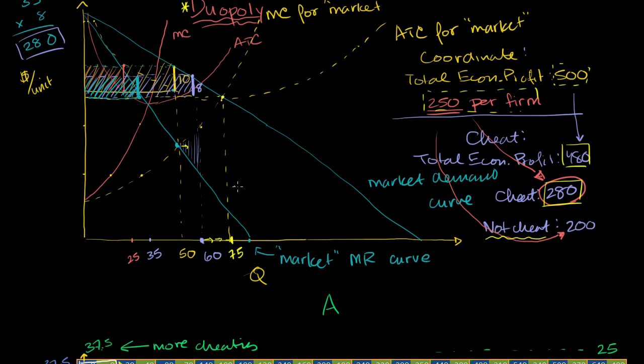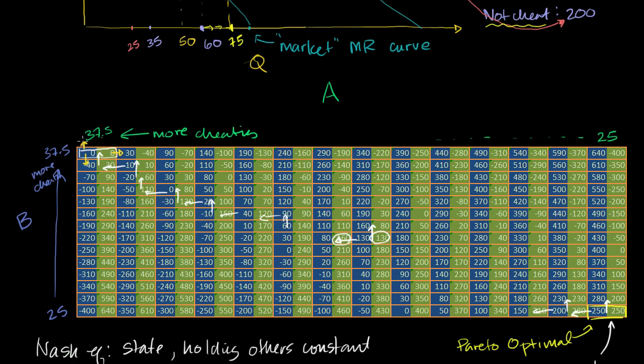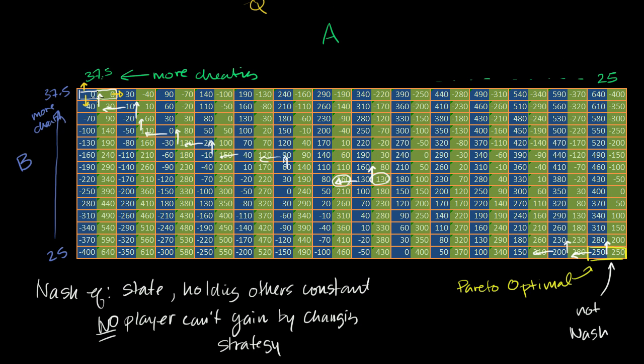You can see it over here. If they increase quantity beyond this market quantity of 75, 37.5 each, the price that they would be selling at that quantity is lower than the average total cost. The average economic profit per unit is going to be negative. There will be a total of negative economic profit. So neither of them will want to produce more from this state either. So in this top left state, holding others constant, B can't gain by changing strategy, and A can't gain by changing strategy. We are in a Nash equilibrium.